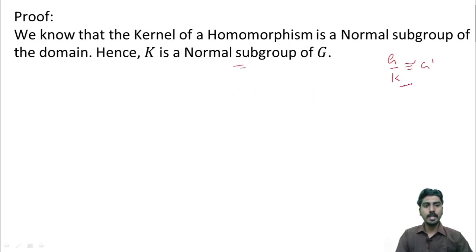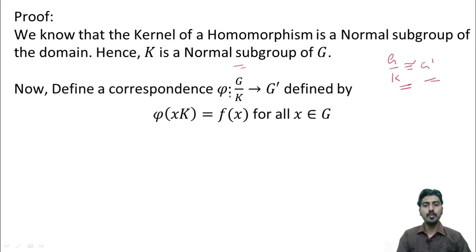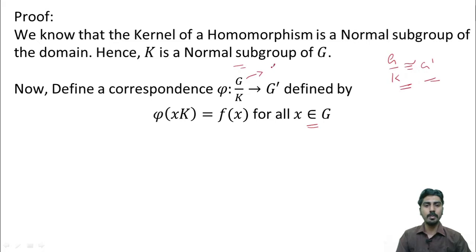To show that G by K is isomorphic to G dash, we have to define a function which is one-one, onto, and is a homomorphism. So, we define a rule phi which maps the elements of G by K into the elements of G dash, defined by phi of xK is equal to f of x for all x belongs to G. We know that the elements of G by K are of the form xK where x is an element of G.